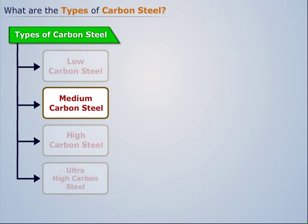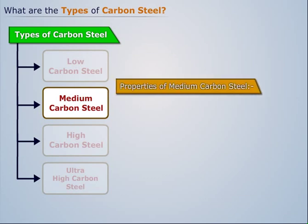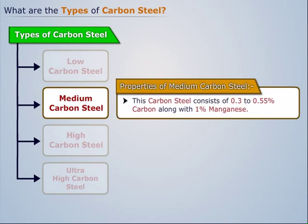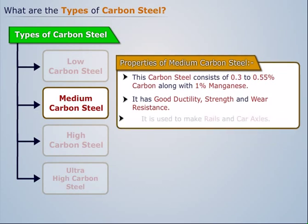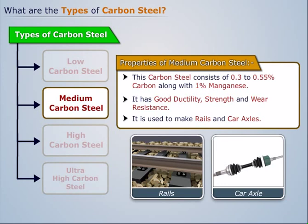Medium carbon steel consists of 0.3 to 0.55% carbon along with 1% manganese. It has good ductility, strength, and wear resistance. It is used to make rails and car axles.